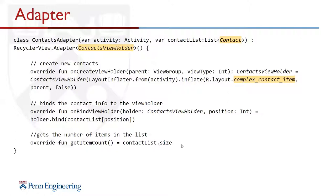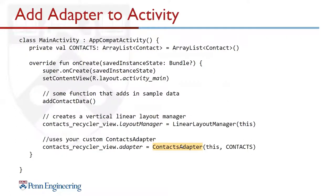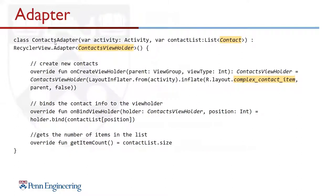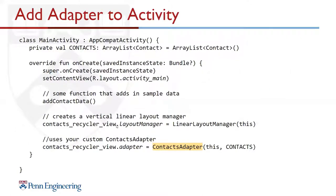Finally, getItemCount returns the size of our contact list, and that's it for the custom adapter. Next we add our adapter to MainActivity. We have a private list called contacts as our database. Inside onCreate, we populate contacts with sample data, set the layout manager as a LinearLayoutManager, and set the adapter as our custom adapter — passing in the activity and our contact list. contacts_recycler_view refers to the ID of the RecyclerView inside activity_main.xml.